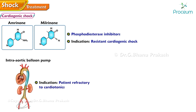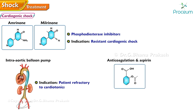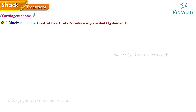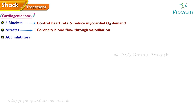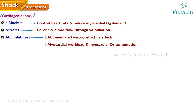Intra-aortic balloon pump is used in cases of patients refractory to cardiotonic therapy. Anticoagulation and aspirin are used in acute myocardial infarction. Beta-blockers are used to control heart rate and reduce myocardial oxygen demand. Nitrates help to increase coronary blood flow through vasodilation. ACE inhibitors are used to reduce angiotensin-converting enzyme mediated vasoconstrictive effects that increase myocardial workload and oxygen consumption.